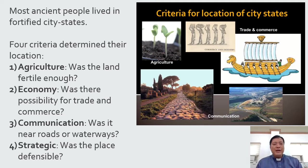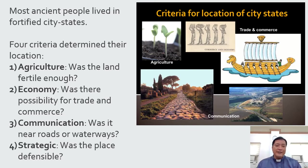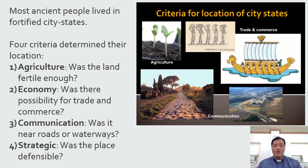In the olden times, many ancient people lived in fortified city-states. When we hear of city-states, what comes to mind is the Greek culture — Aristotle and Plato speak of the city-state. And there are four criteria that determine their location. First, agriculture: was the land fertile enough? Second, the economy: was there possibility for trade and commerce? Third, communication: was it near roads or waterways? And fourth, strategic: was the place defensible?